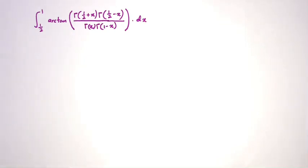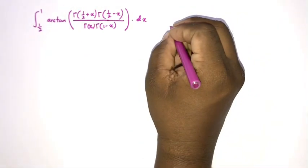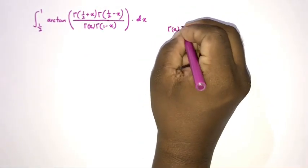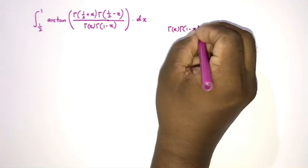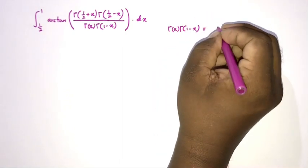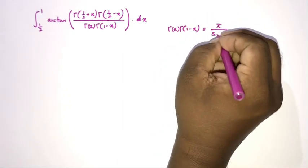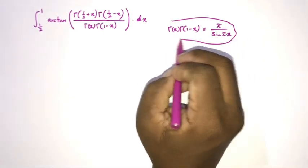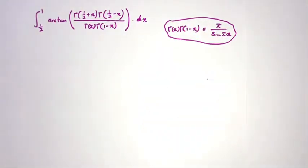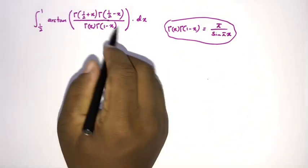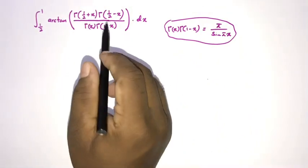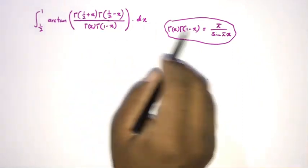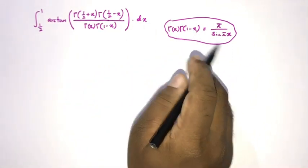At first glance, you will remember Euler's reflection formula. We know Euler's reflection formula: gamma(x) · gamma(1 - x) = π / sin(πx). Now, in the denominator we have gamma(x) · gamma(1 - x), so we can directly use this formula.